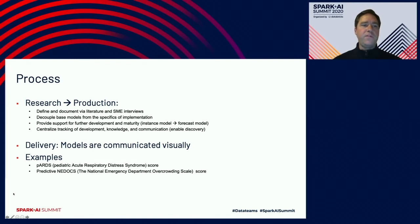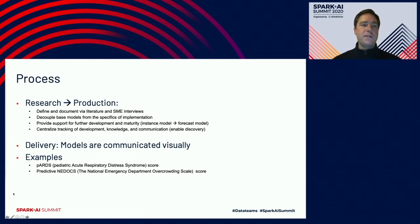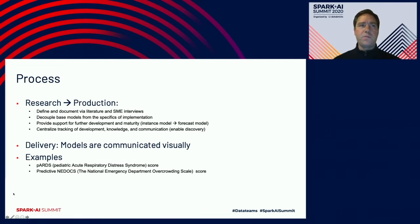We also focus on centralizing tracking of development, knowledge, and communication to enable discovery — our model layer plays a large part of that work. We deliver models visually, communicating them as visualizations. Examples of models we've recently worked on through our framework include a model for pediatric acute respiratory distress syndrome, a scoring model, and predictive KneeDocs, also a scoring model which helps plan emergency department staffing — using a machine learning algorithm to forecast a score two hours into the future.